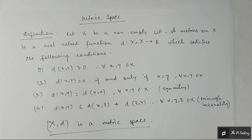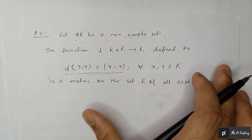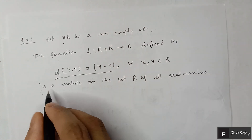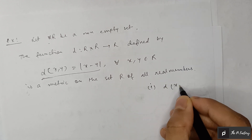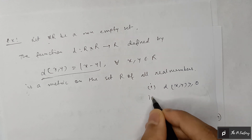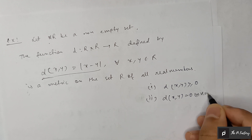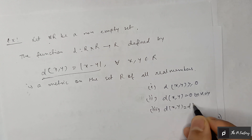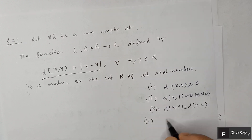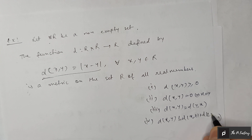Let me show you an example so you will get a clear picture. It is already said that this function is a metric space — now let's prove it. We need to satisfy the four conditions: first, d(x, y) ≥ 0; second, d(x, y) = 0 if and only if x = y; third, d(x, y) = d(y, x) — symmetry; and fourth, the triangular inequality d(x, y) ≤ d(x, z) + d(z, y).